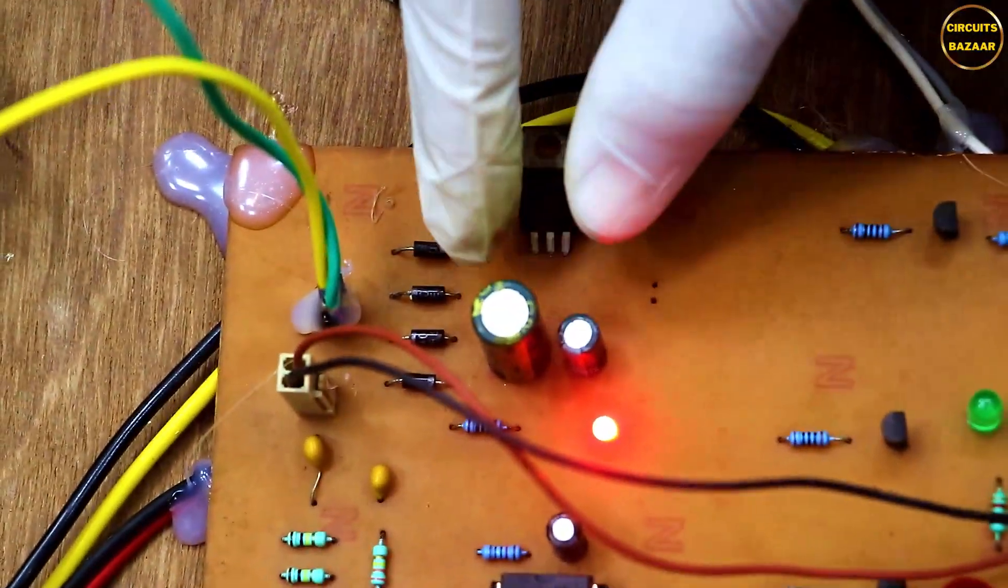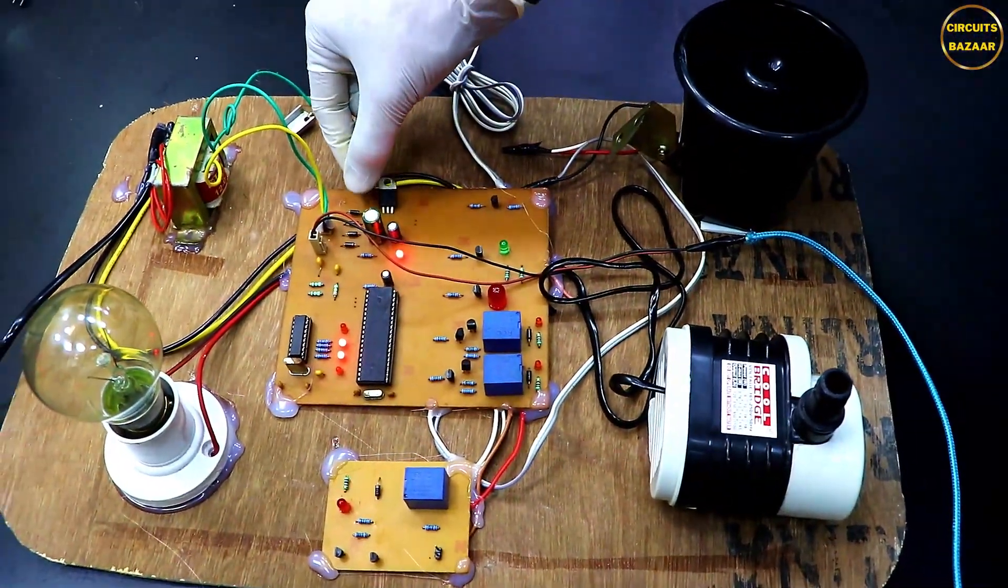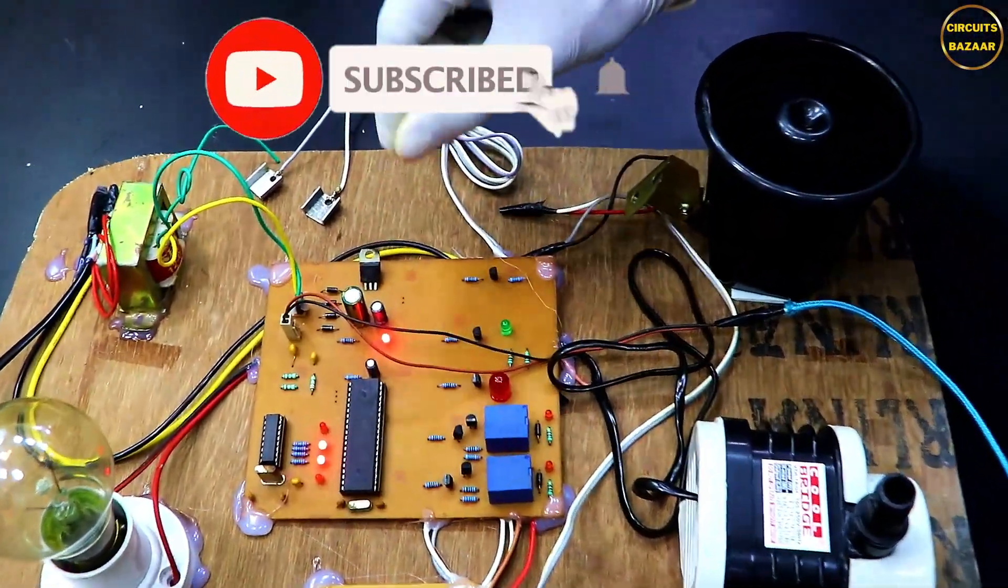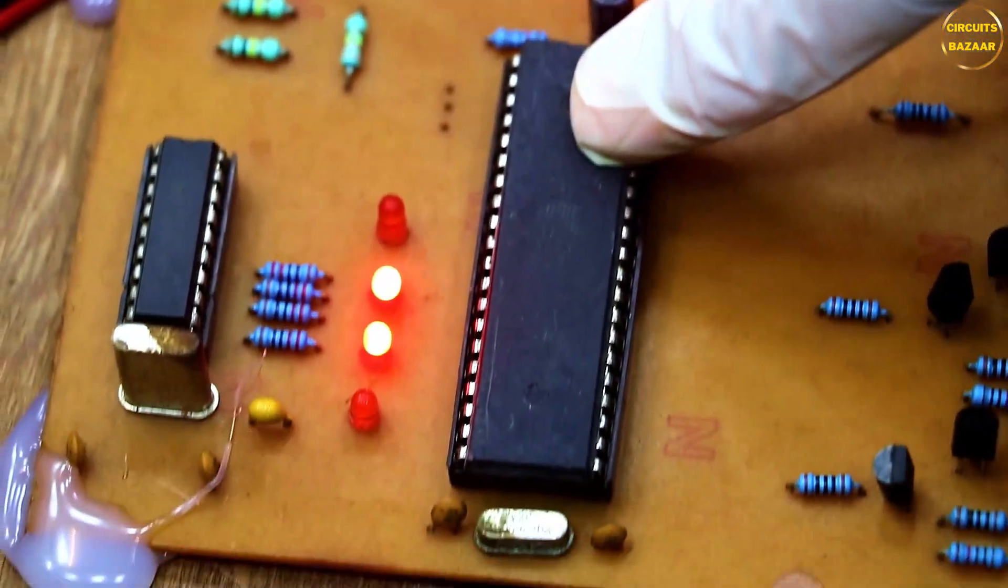Then there is a filter circuit. The filter will filter out any AC component in the power supply. Then there is a 7805 voltage regulator which will convert 12 volt DC into 5 volt DC. Then this 5 volt DC will be utilized by the circuit like the communication section and the microcontroller section. The microcontroller we are using here is 8051 microcontroller.